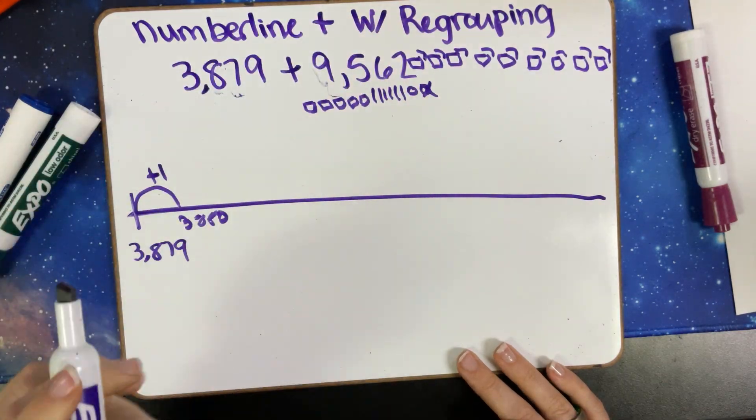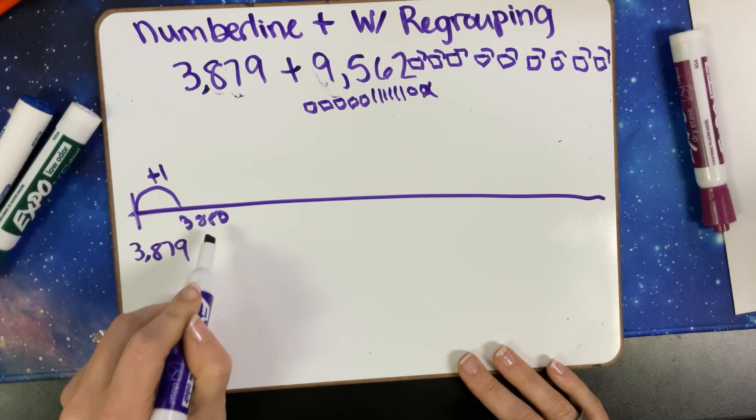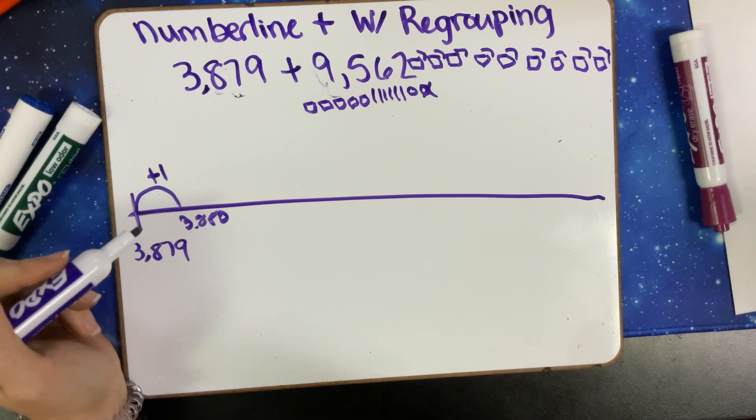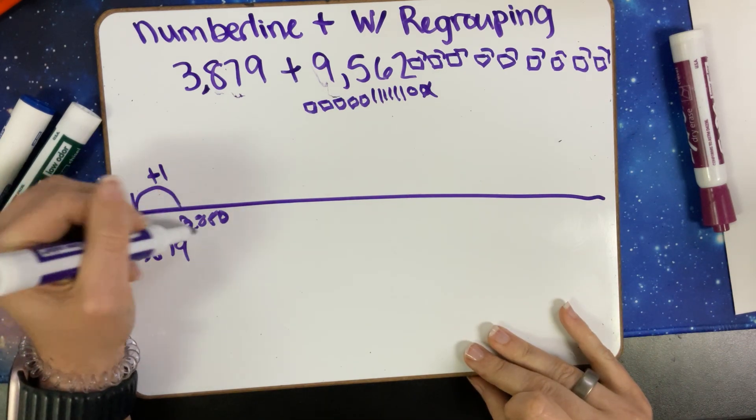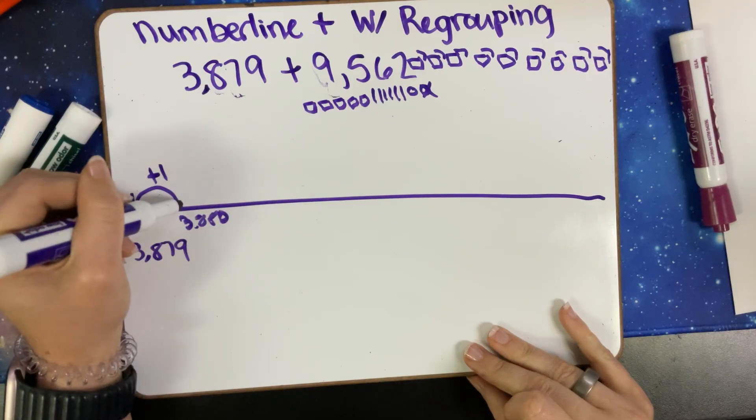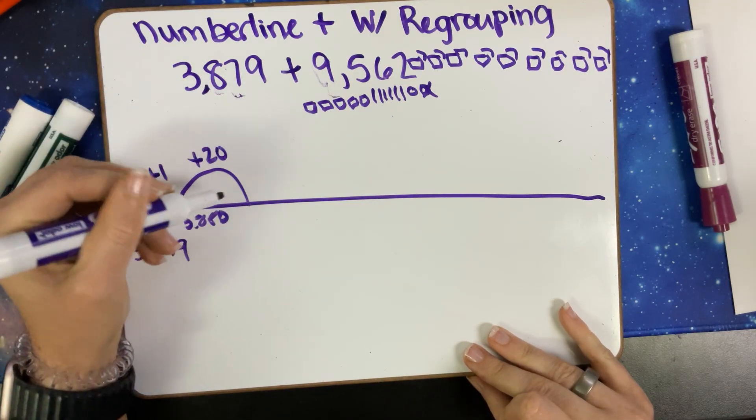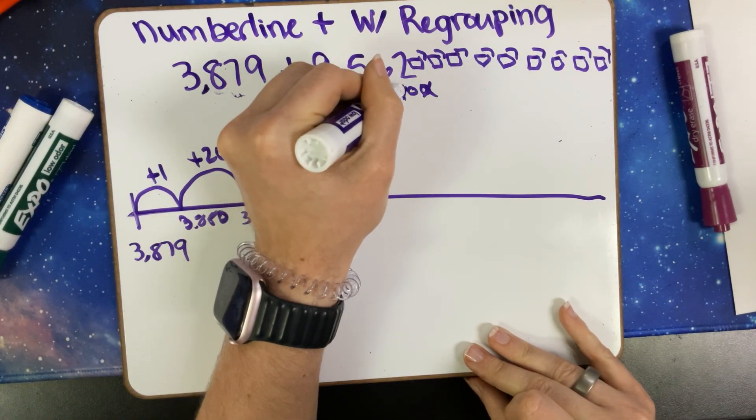So they're all my thousands, so now I have 3,880 as my new number. I think I can make that number even more friendly. I'm going to try and get to an even thousand—my goal is to get to 4,000 right now. So my first step, I'm going to add 20 and now I'm going to have 3,900, so we're going to cross off 20.